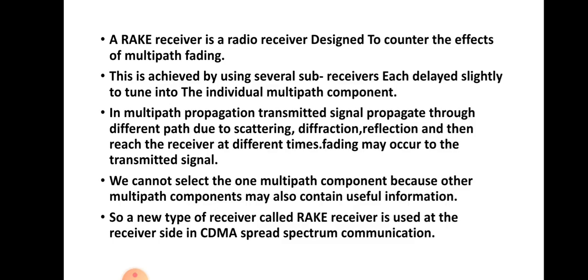Today we are going to discuss about rake receivers. A rake receiver is used as a radio receiver and it is mainly designed to counter the effects of multipath fading. In wireless communication, when the signal is transmitted from transmitter to receiver, the signal may go through different paths due to scattering, diffraction, or reflection. In between the path from transmitter to receiver there will be some obstacles like huge buildings and trees.